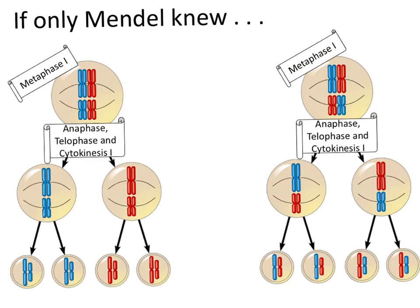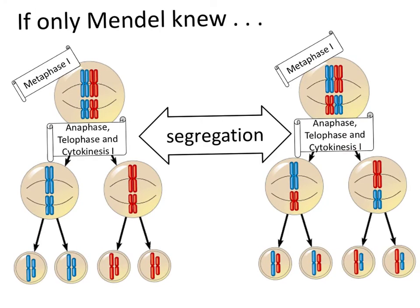And Mendel would have been even more excited if he then realized that during anaphase, telophase, and cytokinesis I, these pairs of homologous chromosomes are getting pulled away from each other — either in this arrangement or in this arrangement. That accounts for his other law: the law of segregation. In this case, shown as the separation of chromosomes, and the alleles on those chromosomes are also being separated from each other and ending up inside different cells.